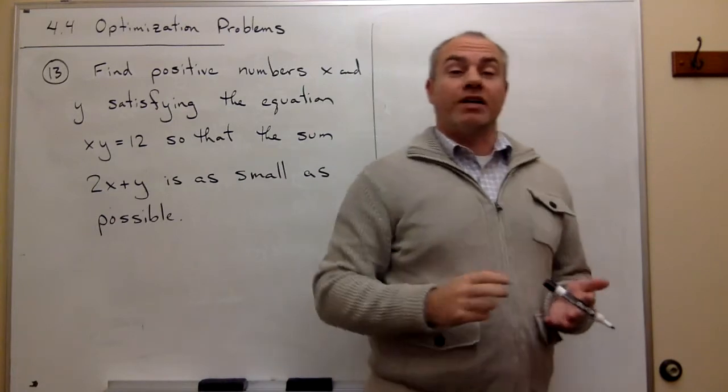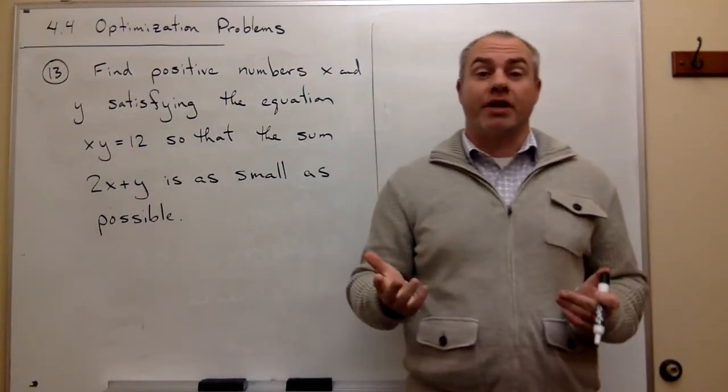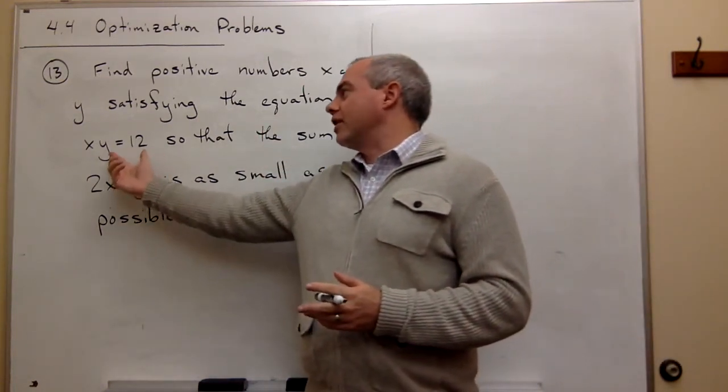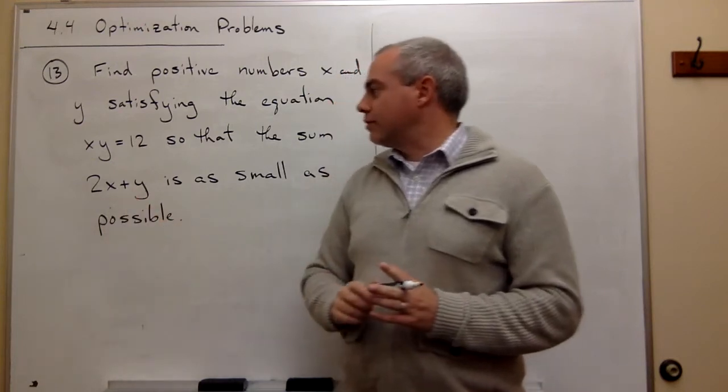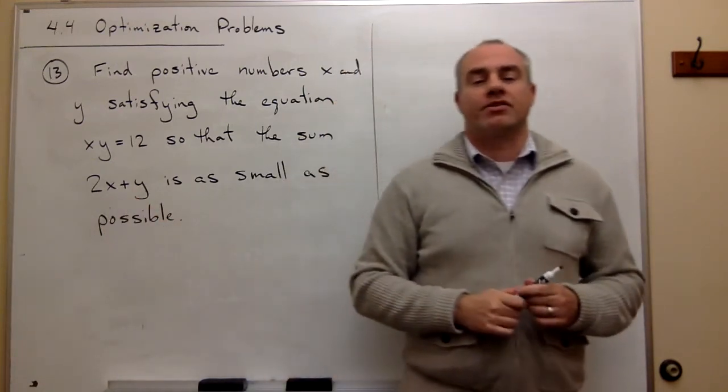Now typically when I do an optimization problem I'd like to start out by drawing some sort of a picture, but since in this problem there's really no picture that goes with the equations xy = 12 and 2x + y, so let's not worry about that so much.